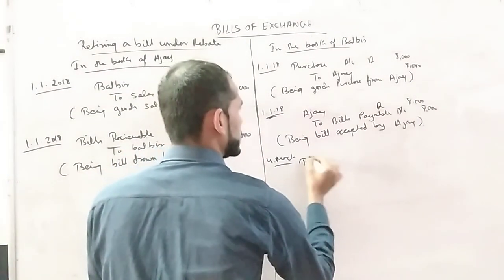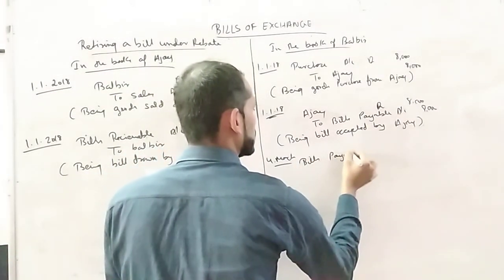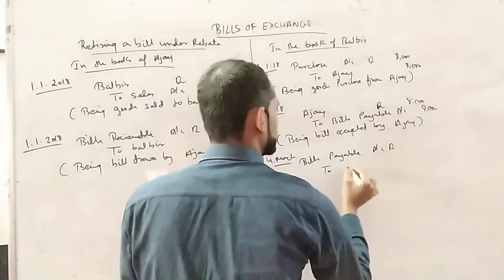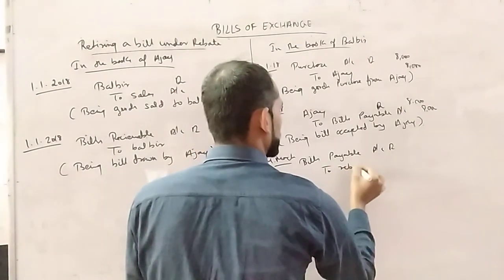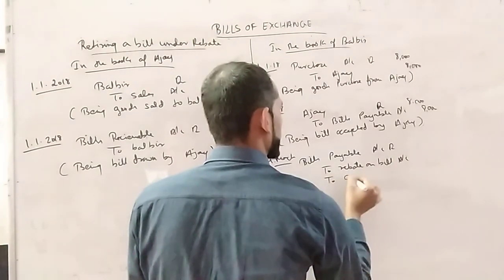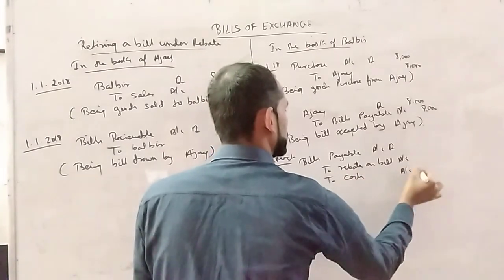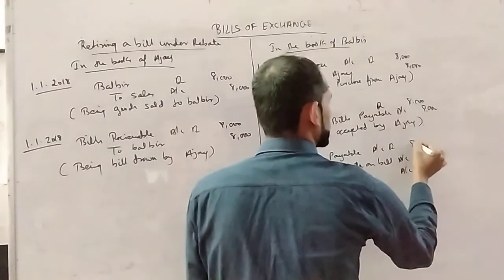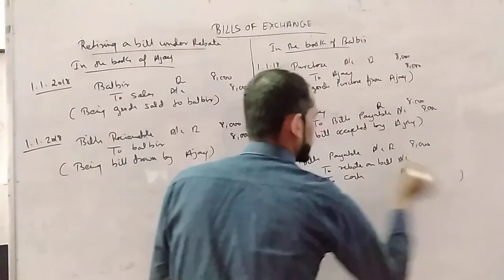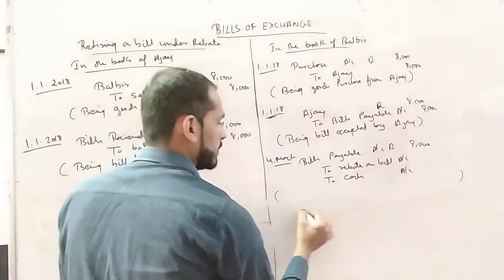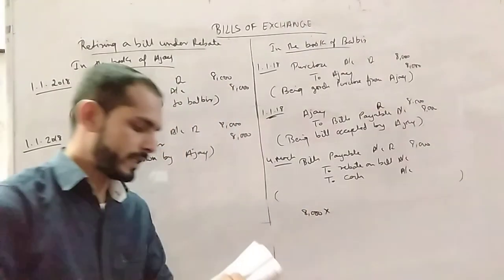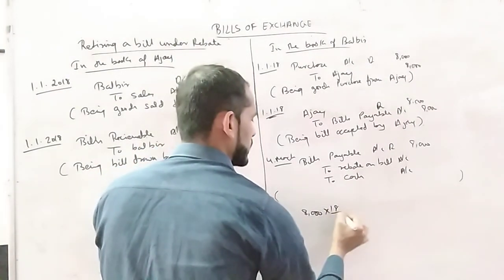Bills payable account to rebate on bill account, to cash. The bill 8,000 vs rebate. The amount - how much? 1 month.